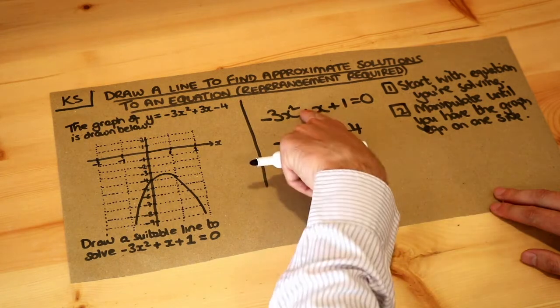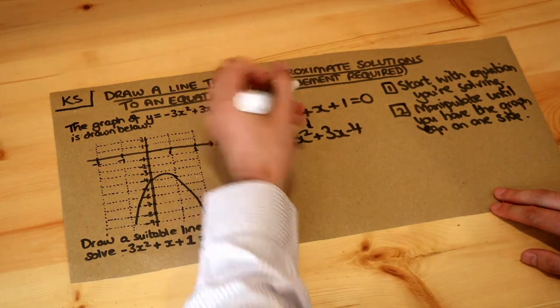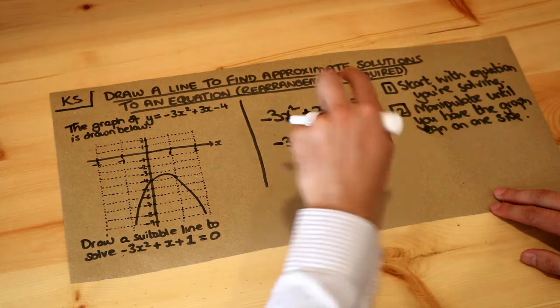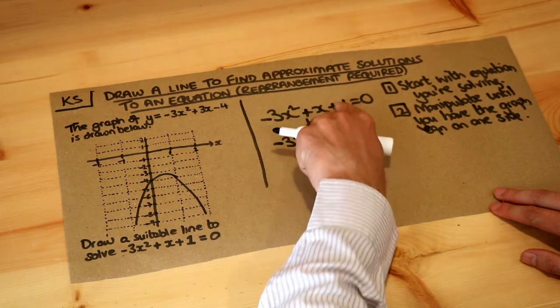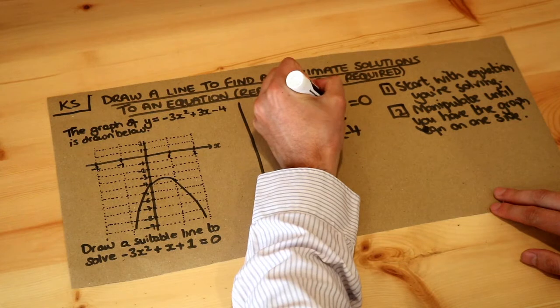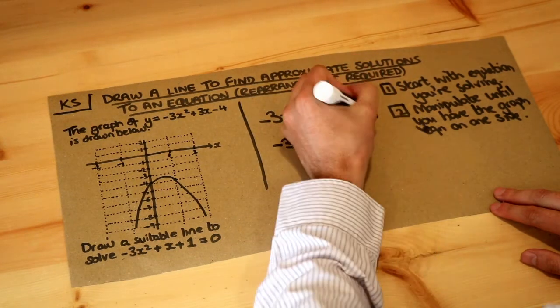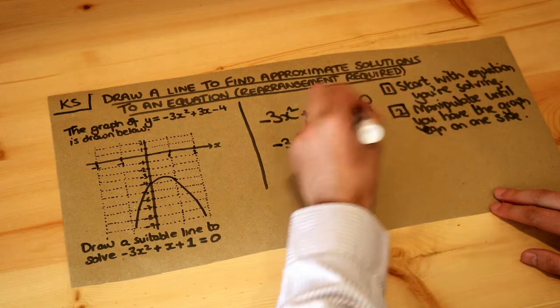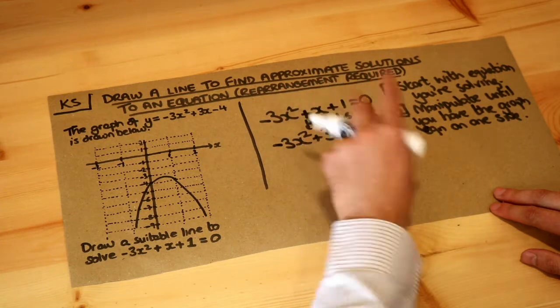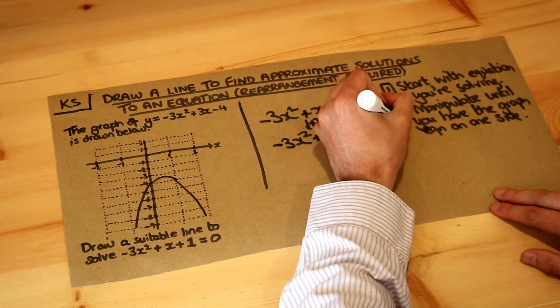Let's think about what we did to get from here to here. We've added 2x to get from x to 3x, and we've also subtracted 5. That means because whatever we do to one side of the equation we do to the other, we're going to add 2x so the 0 becomes 2x, and subtract 5 so it's 2x minus 5.